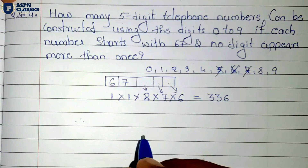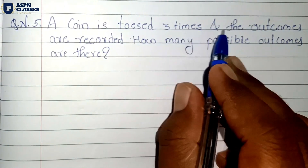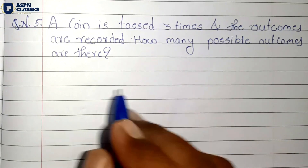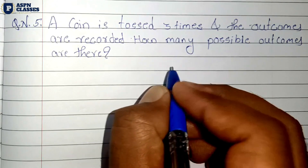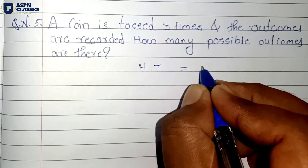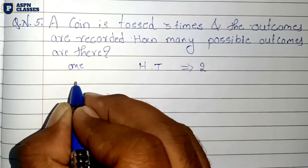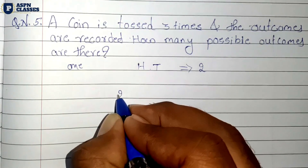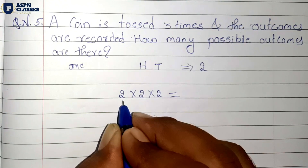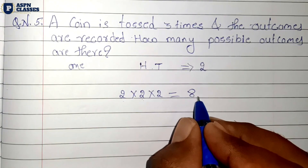Question number five: a coin is tossed three times and the outcomes are recorded. How many possible outcomes are there? When a coin is tossed once, there are 2 possibilities — head or tail. Tossed two times: 2 into 2 is 4. Tossed three times: 4 into 2 is 8 possibilities.